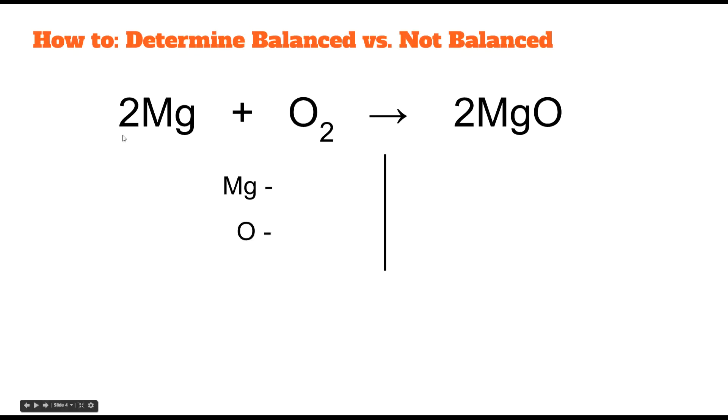This coefficient multiplies through an entire compound. So in this case, it's only going to multiply through the magnesium. Because there's no subscript, you assume that it's 1. So 2 times 1. In this case, there's 2 magnesium atoms. Oxygen, subscript of 2. 2 oxygens.